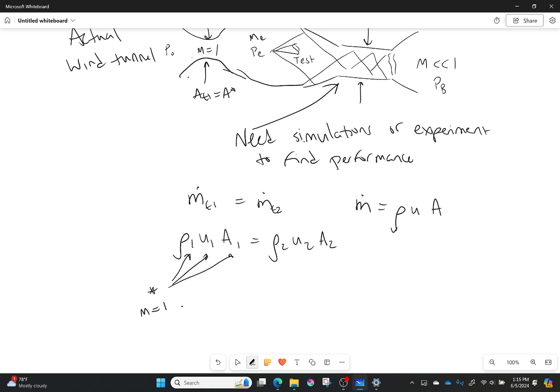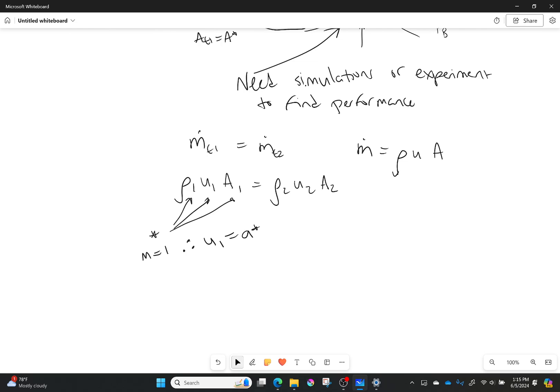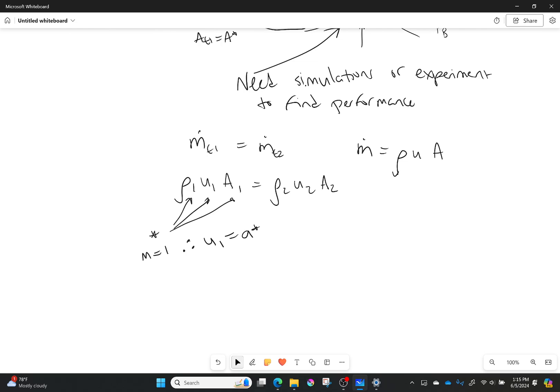And so at that case that means that U1 will be equal to A star. So I can rewrite that a little bit. I can say, okay, well this is rho 1 star now.